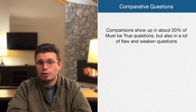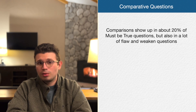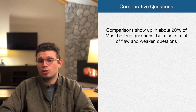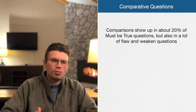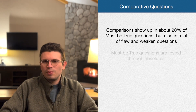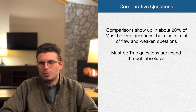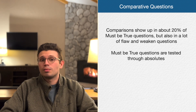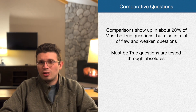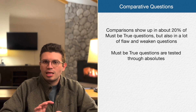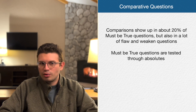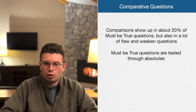Last but not least, we have comparative reasoning. Comparisons show up in about 20% of must be true questions, and also in a lot of flaw and weaken questions, which are your biggest questions on test day. Working causation and comparisons in must be true questions helps you build this skill because typically comparisons are tested via absolutes, making them really easy to spot if you know what you're looking for. You can master comparative reasoning here without the weird tricks and traps that show up in other question types.